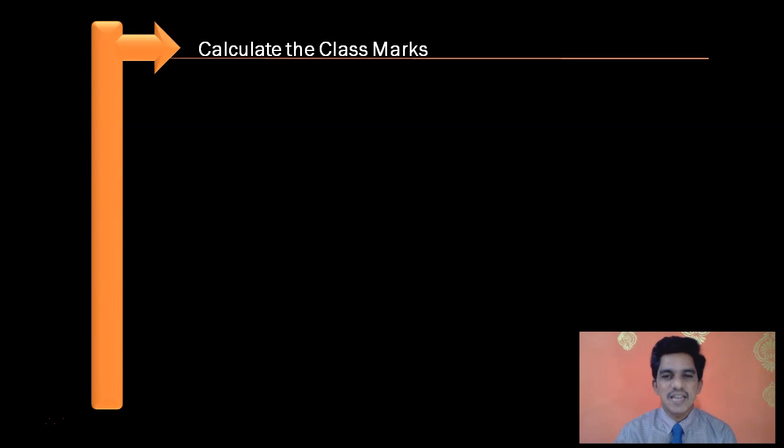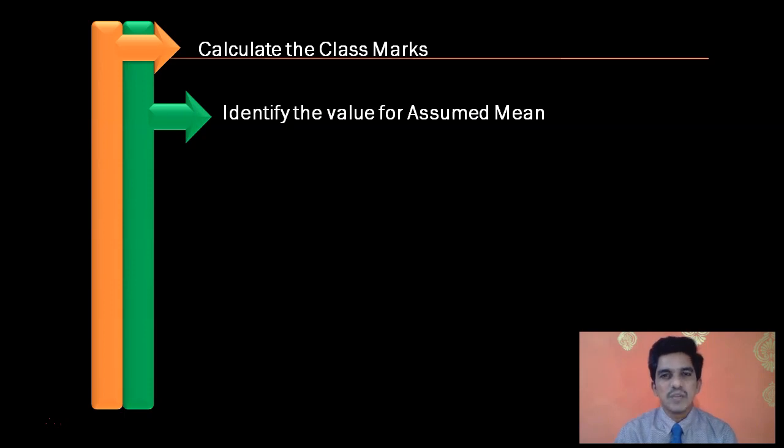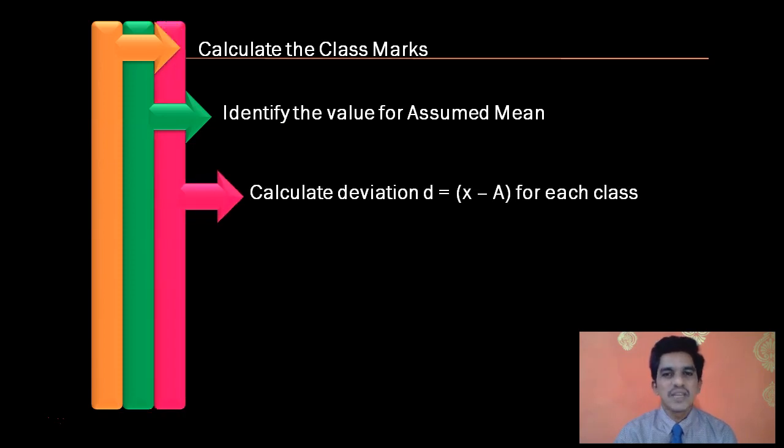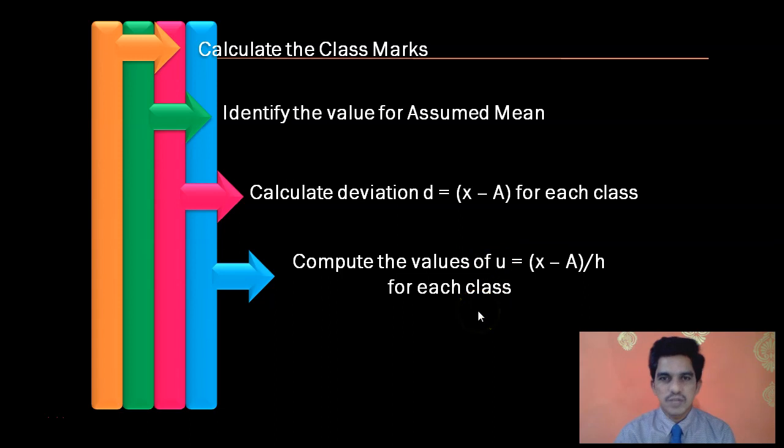So the steps that are to be followed to calculate the arithmetic mean for a classified data are as follows. First, you have to calculate the class marks. Then, identify the value for assumed mean. Then you have to calculate deviations from the assumed mean. The sign of the deviation, whether it is negative or positive, is important. Then find the values of u by dividing the deviation by h.